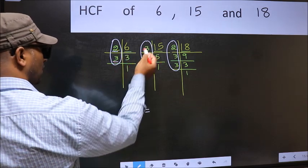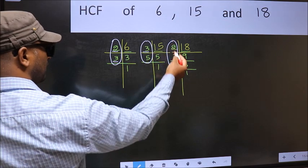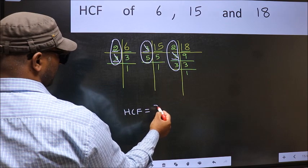Next number 3. Do we have 3 here? Yes. Go to the next place. Do we have 3 here? Yes. So cut 3 right here.